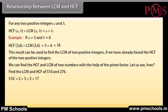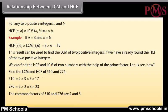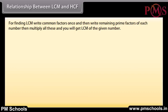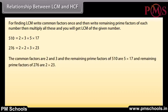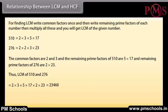510 equals 2 into 3 into 5 into 17. 276 equals 2 into 2 into 3 into 23. The common factors of 510 and 276 are 2 and 3, so HCF equals 2 into 3 equals 6. For LCM, write common factors once and then write remaining prime factors of each number: common factors 2 and 3, remaining factors of 510 are 5 and 17, remaining factors of 276 are 2 and 23. Thus LCM equals 2 into 3 into 5 into 17 into 2 into 23 equals 23,460.